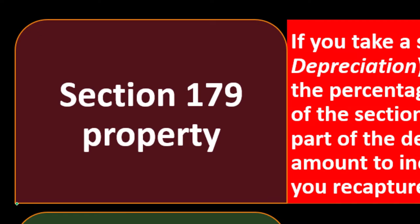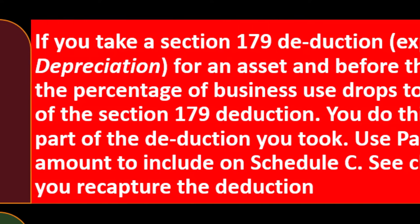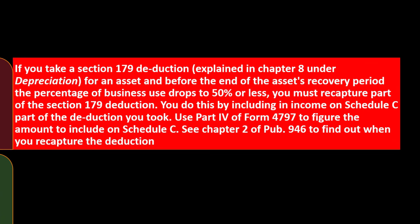Section 179 property: Section 179 is typically used to accelerate depreciation, allowing you to deduct the full cost in Year 1. This leads to over-depreciation from an accounting standpoint and a lower adjusted basis, meaning you'll likely have a gain when you sell. If you take a Section 179 deduction for an asset and before the end of the asset's recovery period the percentage of business use drops to 50% or less, you must recapture part of the Section 179 deduction. You do this by including in income on Schedule C the applicable part of the deduction. Use Part 4 of Form 4797 to figure the amount; see Chapter 2 of Publication 946.